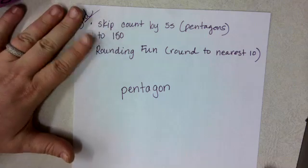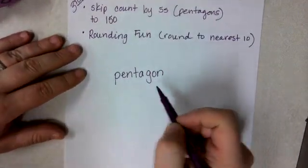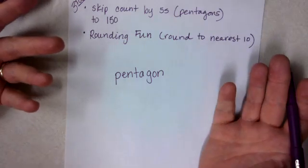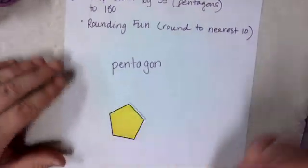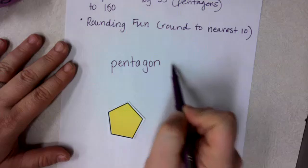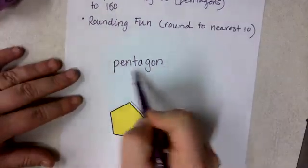For skip counting by fives to 150, one thing I want to make sure students know is what the word is that we're counting by. We're counting by pentagons. And so talking through what is a pentagon, have a visual display for them, write it on a sheet, whiteboard, whatever, and talk through.